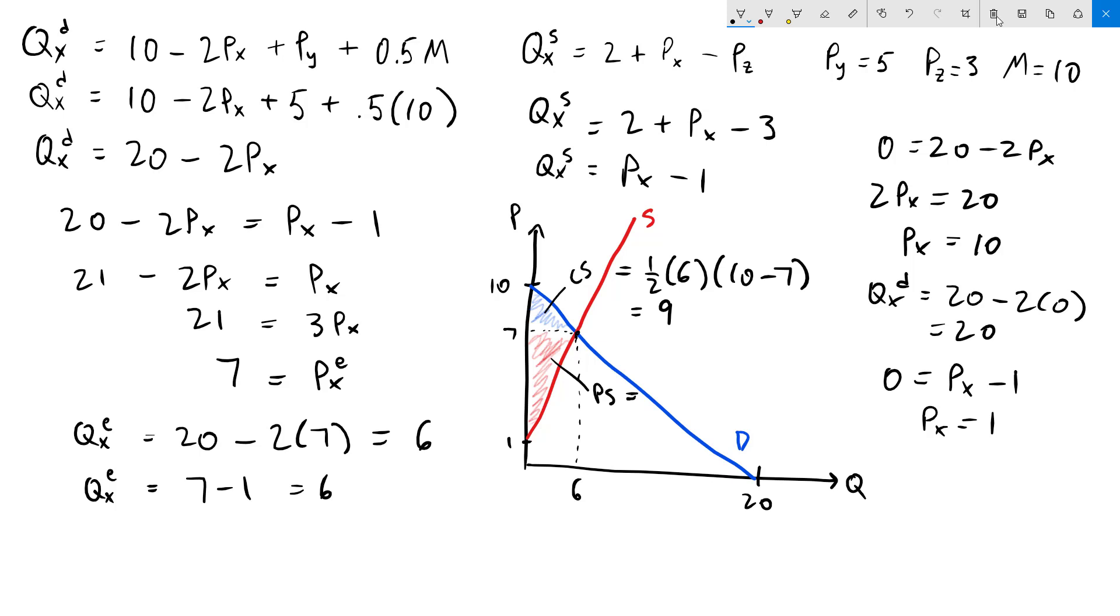For the producer surplus, again we have one-half base times height. The base is 6. The height is 7 minus 1, which is 6. And what we get is an area of 18.